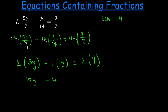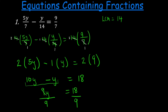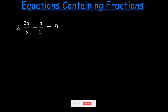So 9 is positive 18. We have like terms, so 10y minus y gives us 9y equal to 18. We want to get the variable by itself, so we divide both sides by 9. Therefore y equals 9 into 9 is 1, and 9 into 18 is 2, so y is equal to 2.